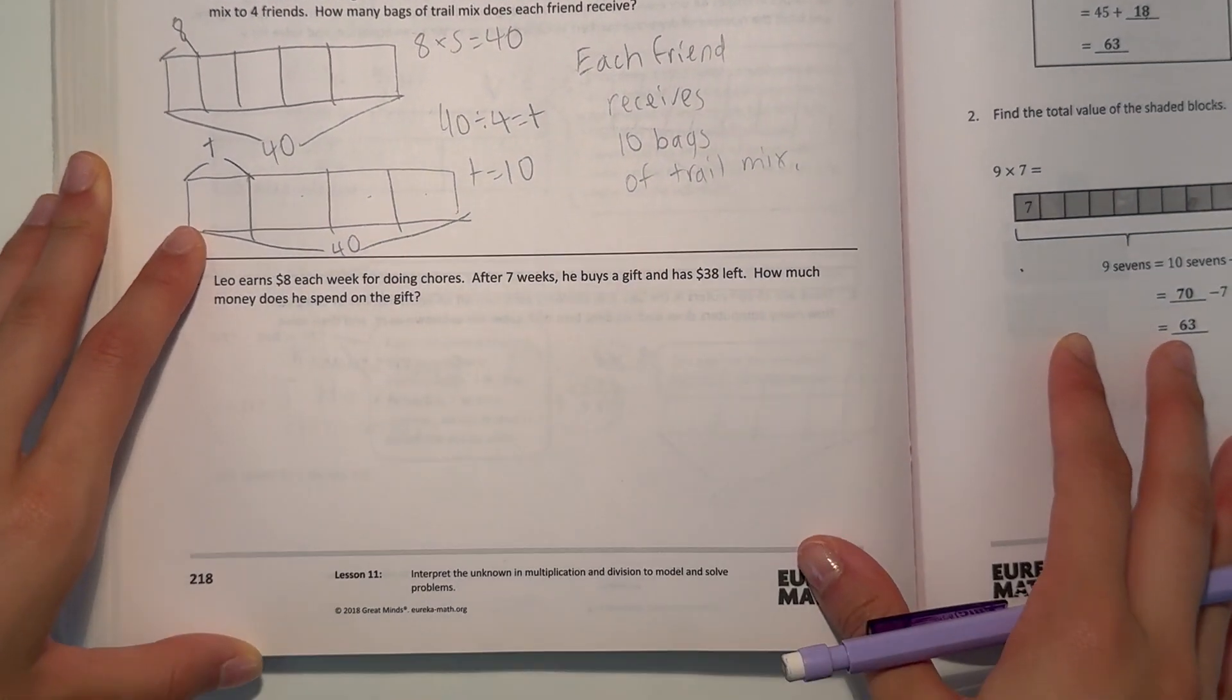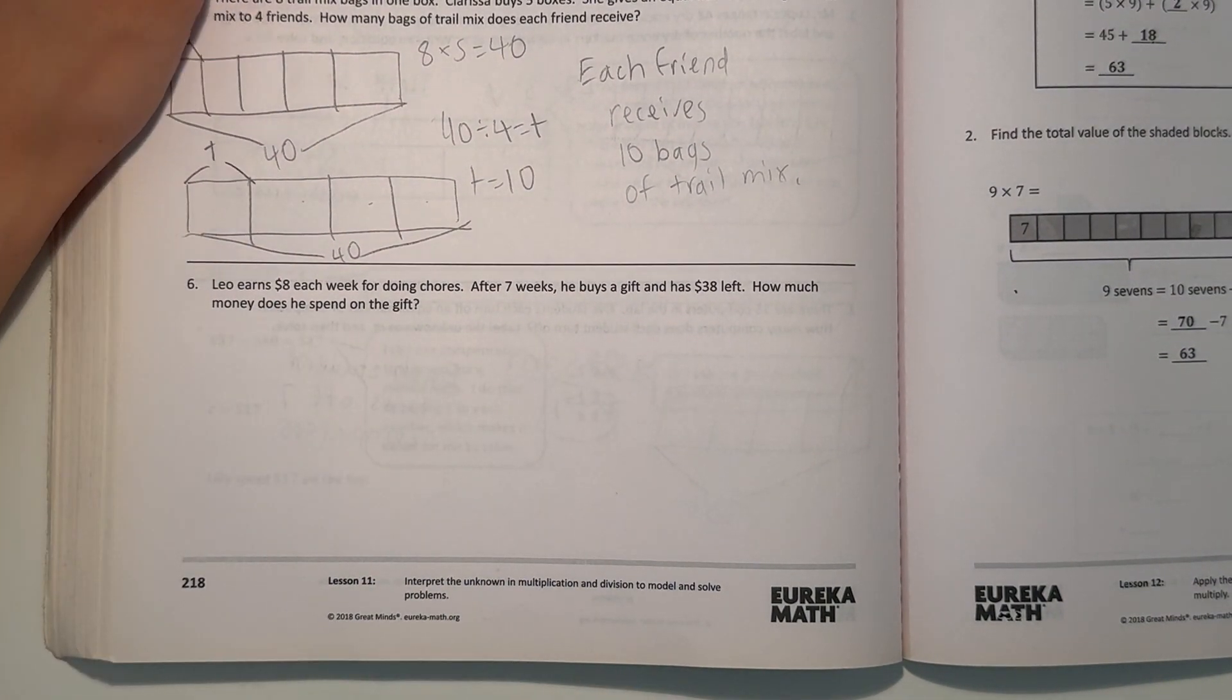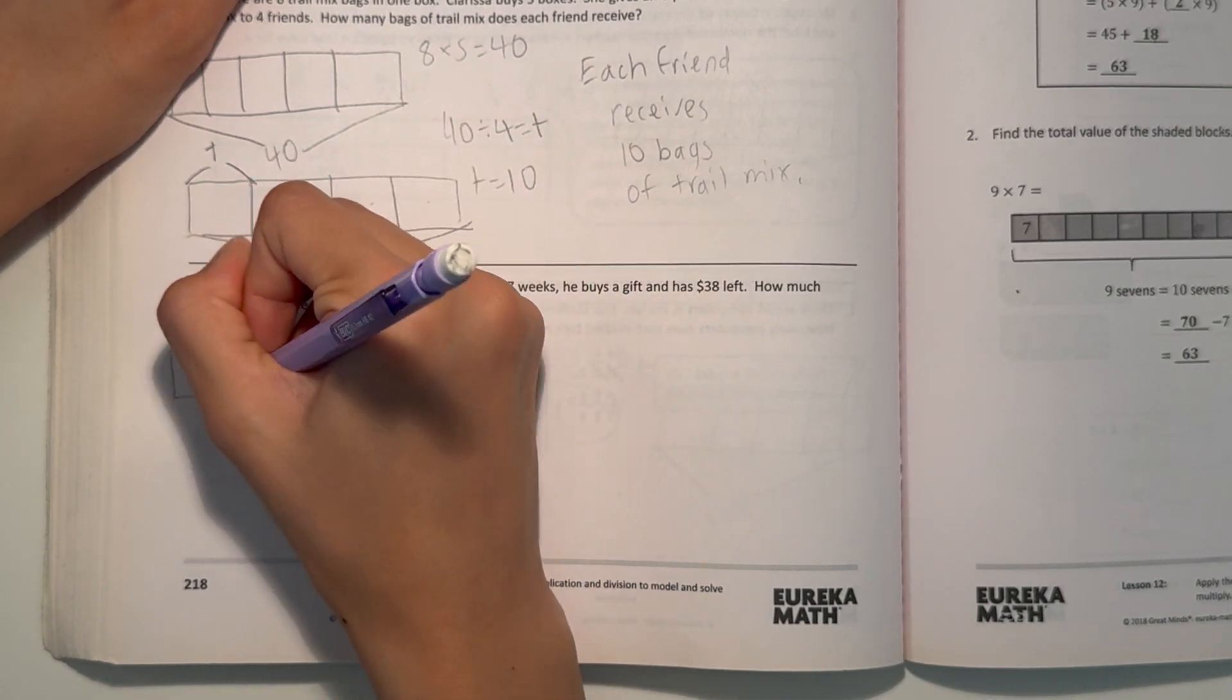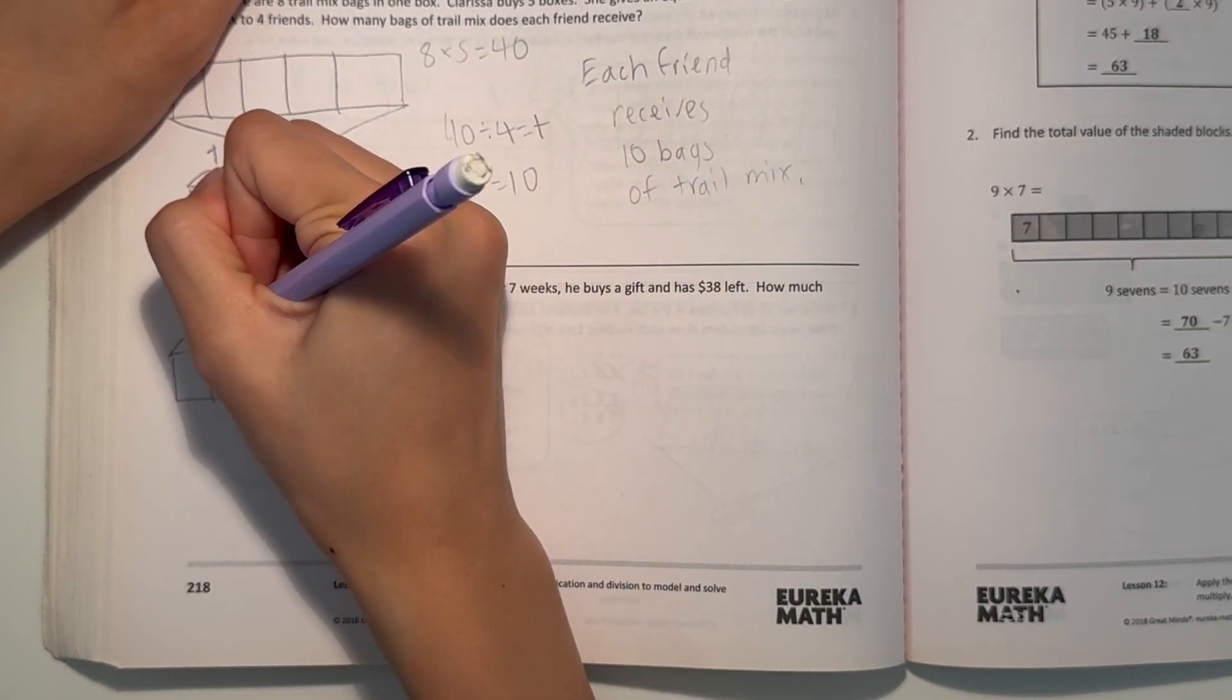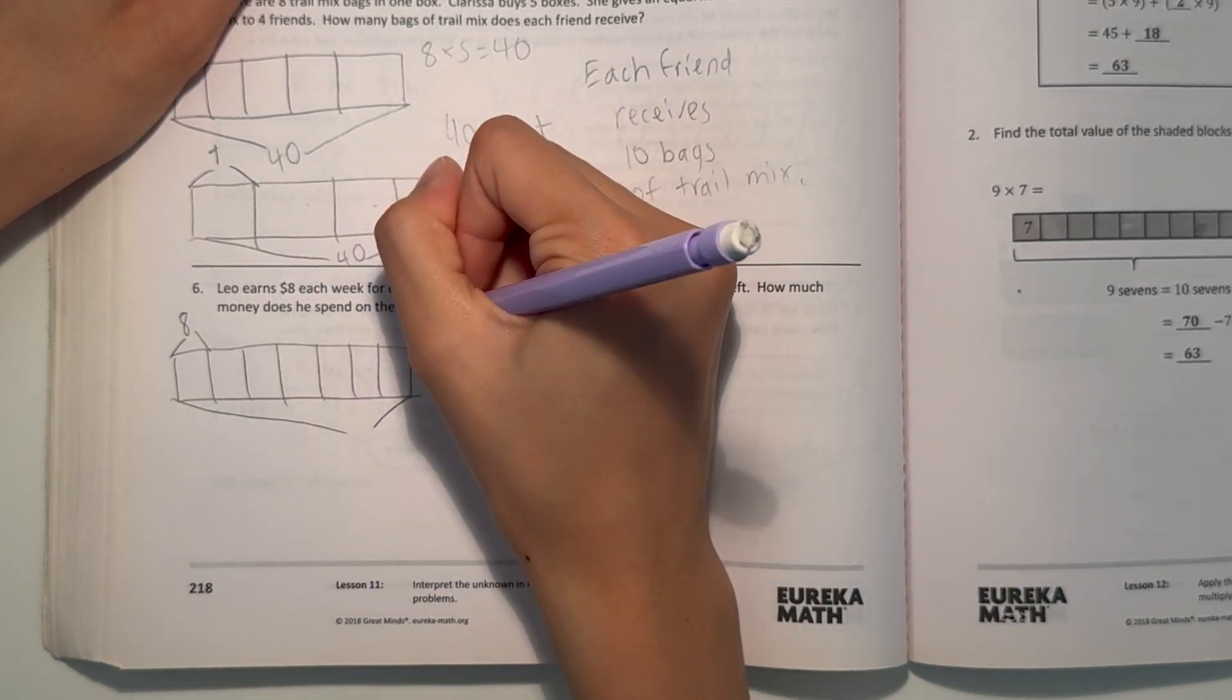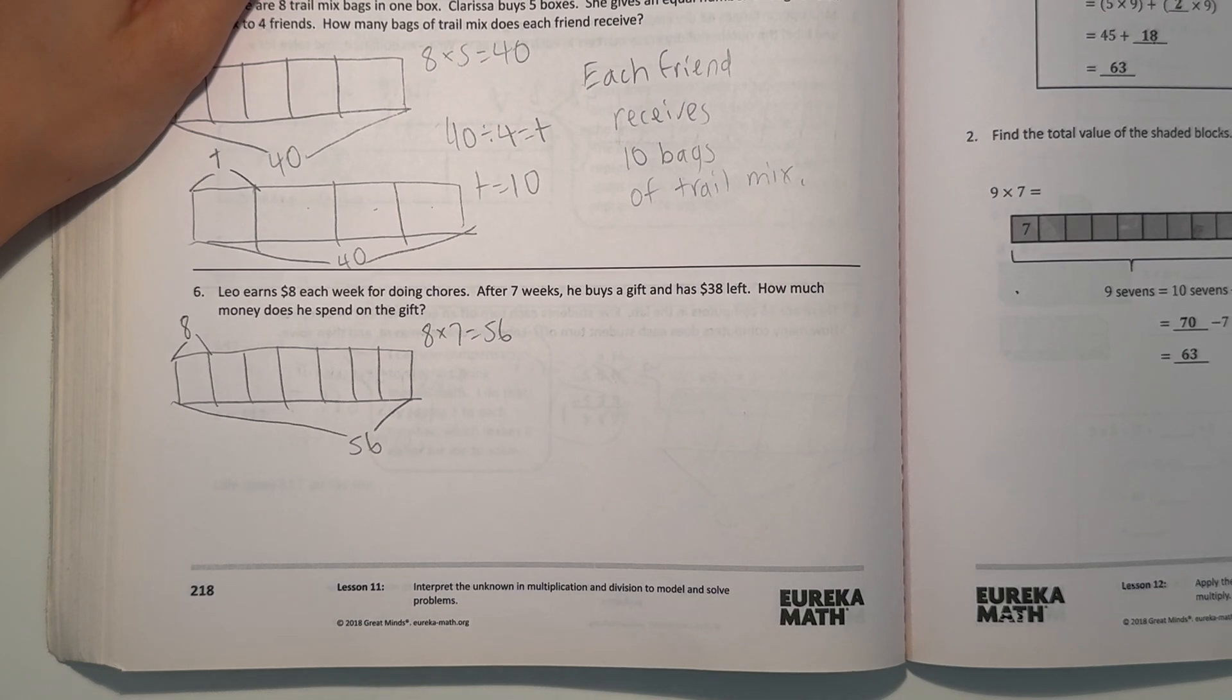Leo earns $8 each week for doing chores. After 7 weeks, he buys a gift and has $38 left. How much money does he spend on the gift? Alright, $8 a week for doing chores. So 7 weeks, and each week equals $8. So how much total money does he have right now? We want to do 8 times 7 equals 56. So right now, Leo has a total of $56 to spend.